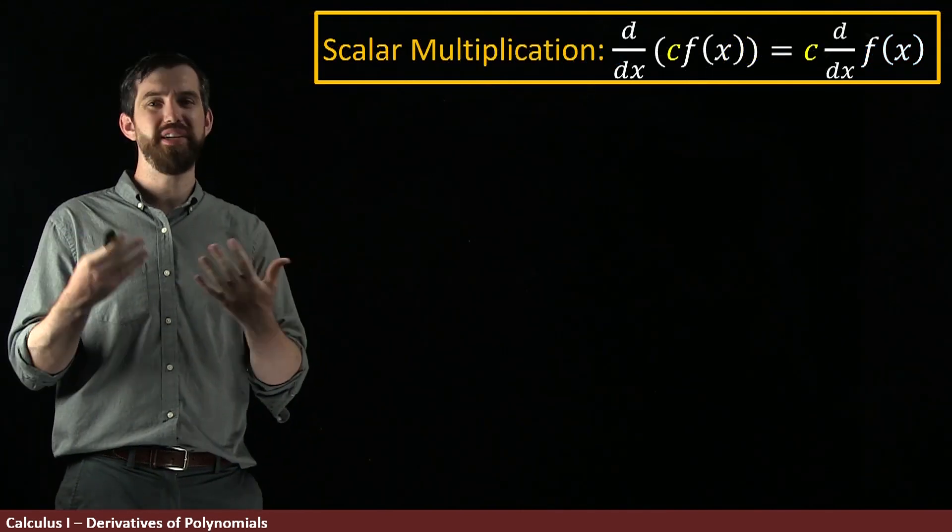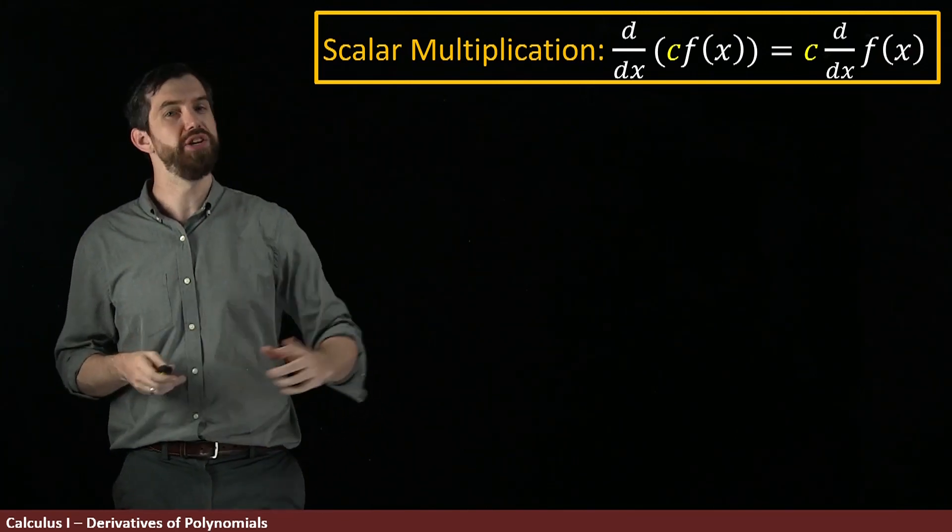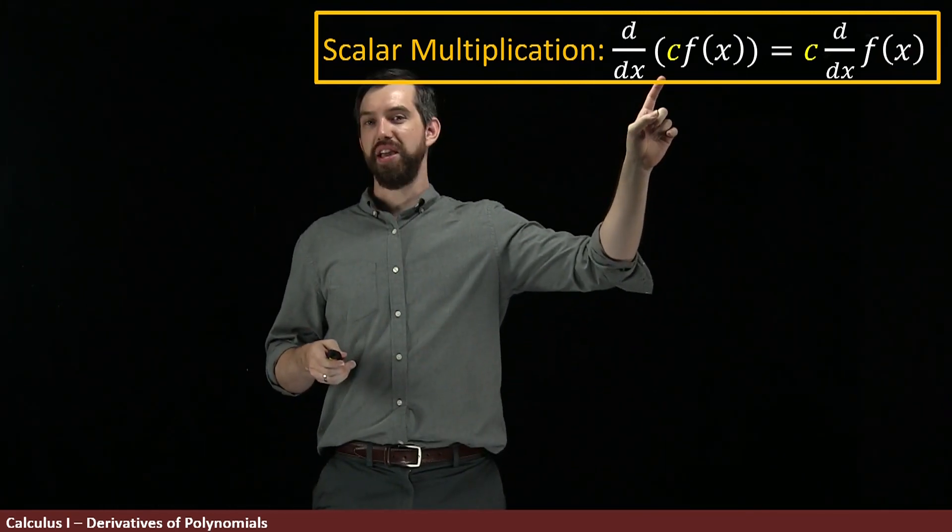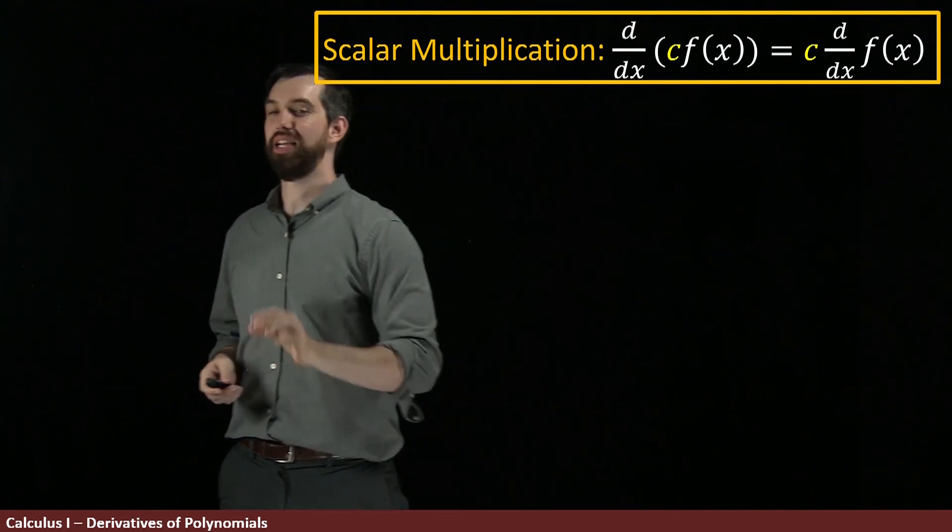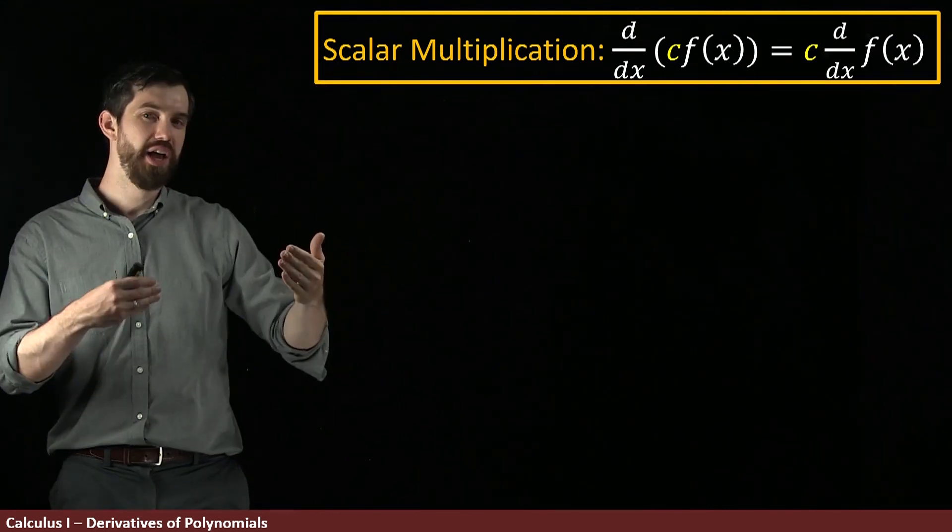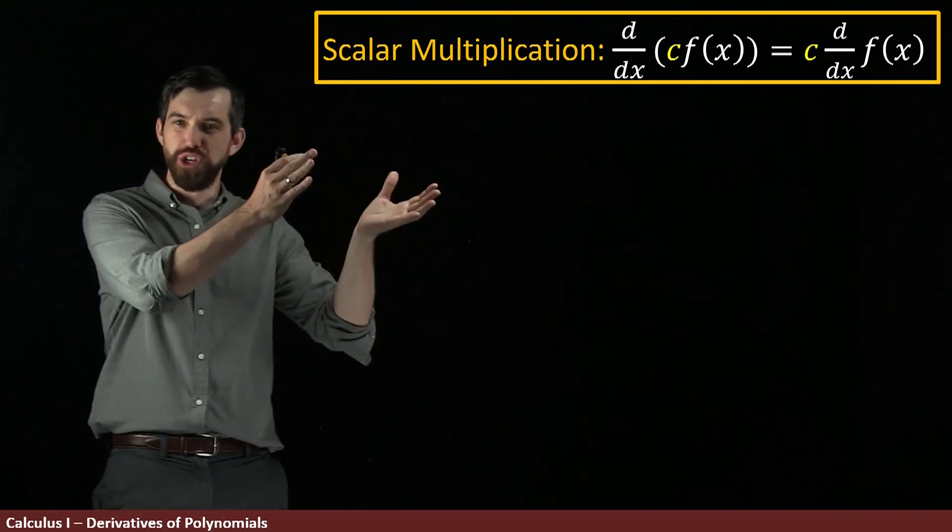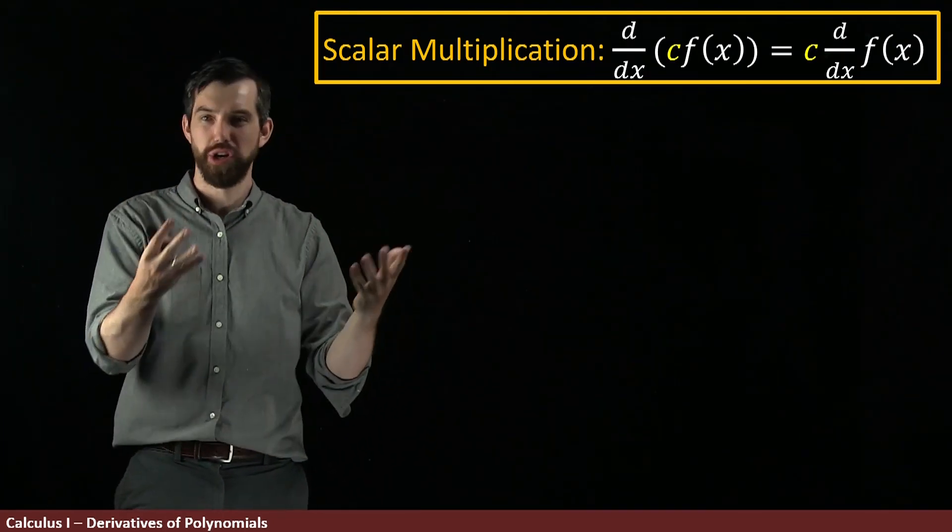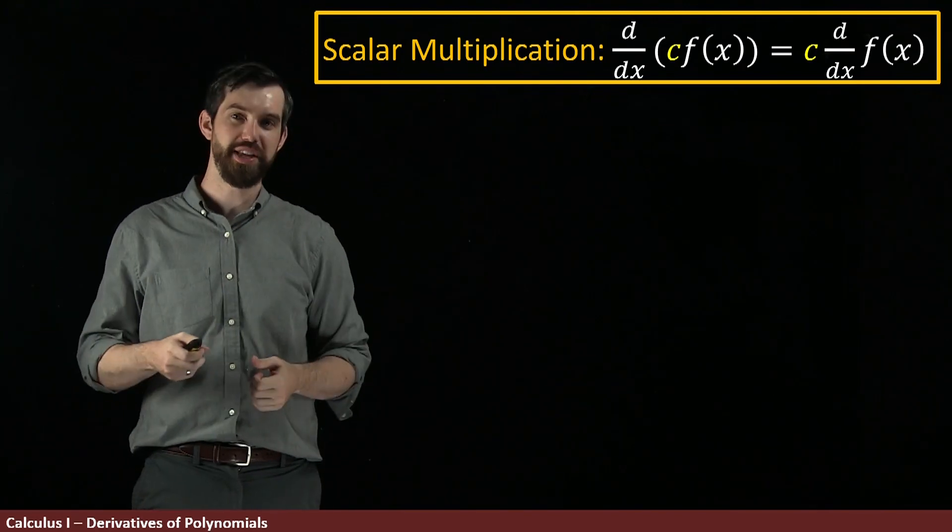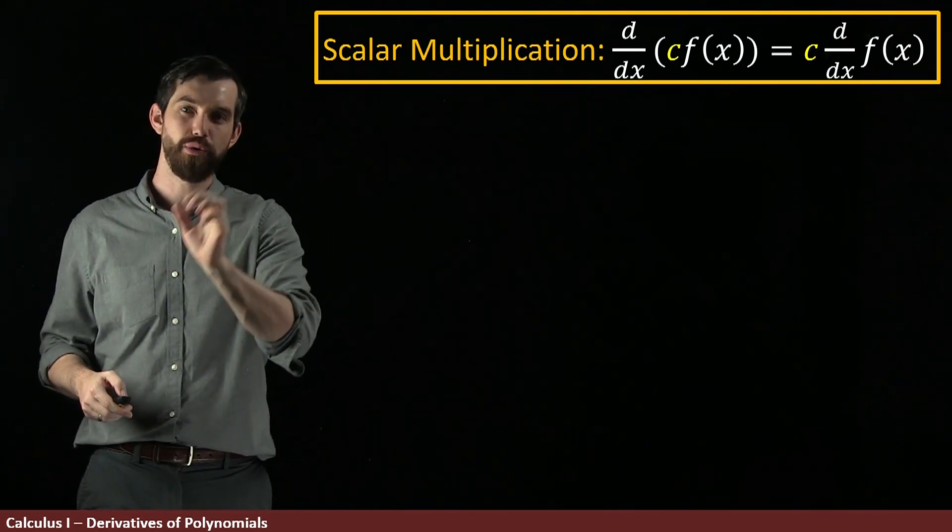Next up, we have a very similar result: scalar multiplication. The derivative of a constant times f of x is a constant times the derivative of f. I can rearrange where the constant goes. Now, if we wanted to, we could do a proper definition of the derivative like we had just done for additivity. But I'm going to show this to you graphically.